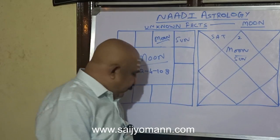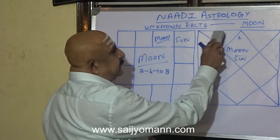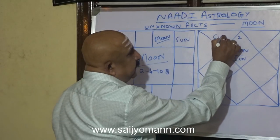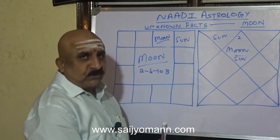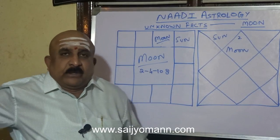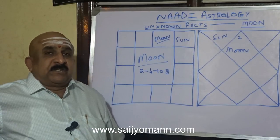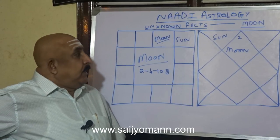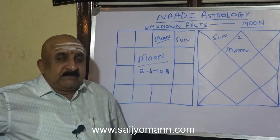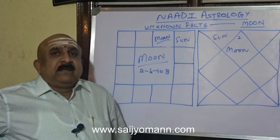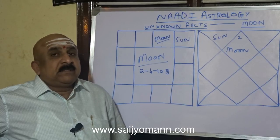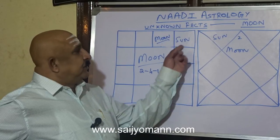Sun in the 2nd house from Moon means the mother will speak very practically, because the 2nd house is vakusthana — the speech part of it will be very strong, the native's mother's speech. Also, the 2nd house tells about money — the mother will be spending a lot for spiritual purposes, pujas, prayers, and pilgrimages. That expenditure is shown here.